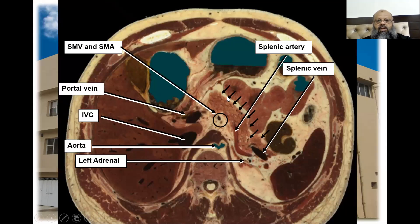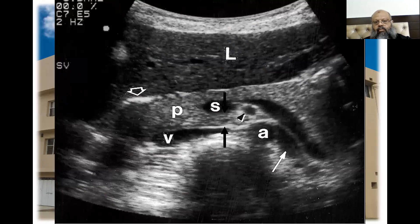Looking at the pancreas structure, we can identify the splenic artery, the splenic vein, the pancreas, the superior mesenteric artery and vein, the IVC, the aorta, and the left adrenal gland. We also see the liver, the splenic vein, and the pancreas head with its neck, uncinate process, body, and tail.